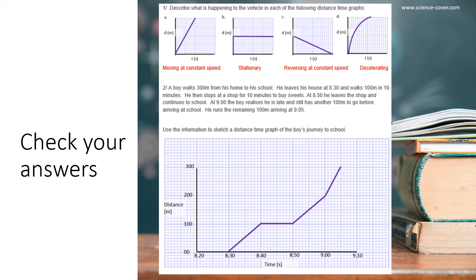Question two: a boy walks 300 meters from his home to school. He leaves his house at 8:30 and walks 100 meters in 10 minutes. He then stops at a shop for 10 minutes to buy sweets. At 8:50, he leaves the shop and continues to school. At 9 o'clock, the boy realizes he is late and still has another 100 meters to go. He runs the remaining 100 meters and arrives at school. You can see that distance time graph displayed on the screen now.